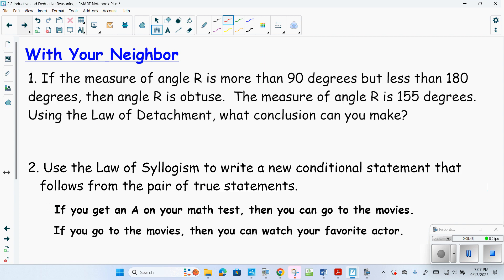If the measure of angle R is more than 90 degrees but less than 180 degrees, then angle R is obtuse. The measure of angle R is 155 degrees. Using the law of detachment, we can conclude that angle R is obtuse. Here's the law of syllogism now. If you get an A on your math test, then you get to go to the movies. If you go to the movies, then you can watch your favorite actor. So, if you get an A on your math test, then you can watch your favorite actor.